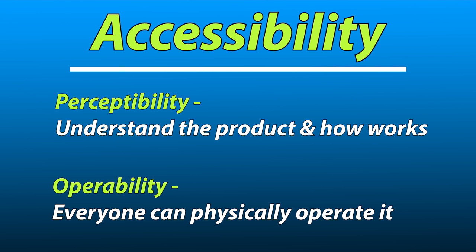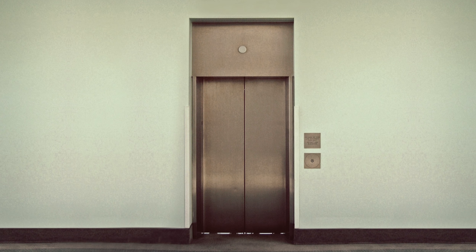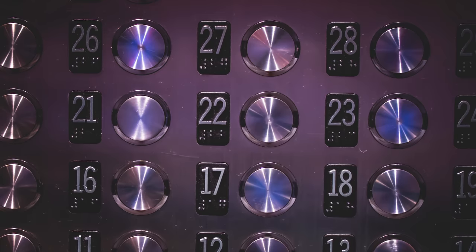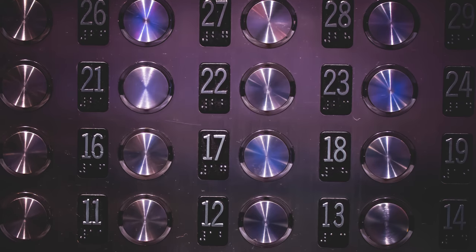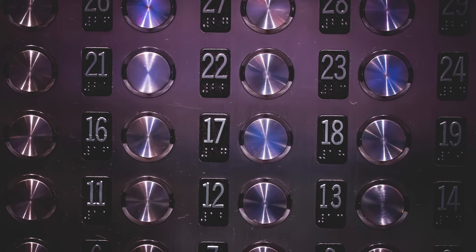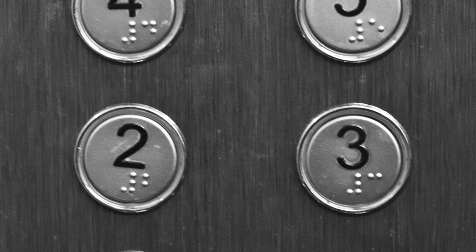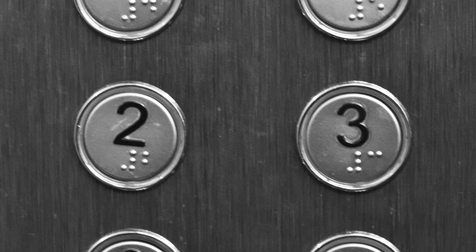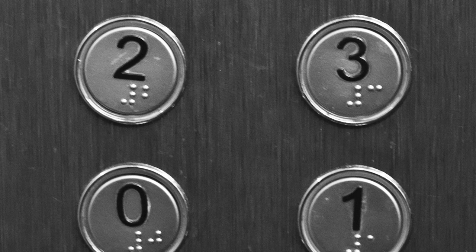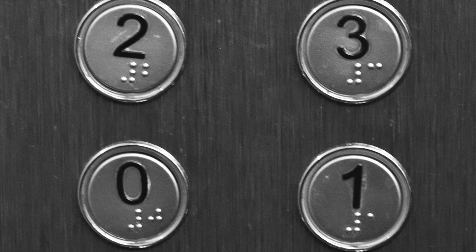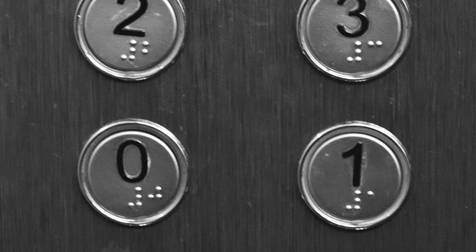Operability means everybody should be able to operate it regardless of their skill set or their physical abilities. So perceptibility — if we were to take an example of an elevator — when you walk into an elevator, do you understand what this is and do you understand what the controls are and how it works? There are literally numbers and buttons. Another thing about the elevator example is that you'll often see Braille next to the push buttons, which means if somebody's blind and they can't see the buttons, they still have a way to operate it. That is the heart of the matter with operability.